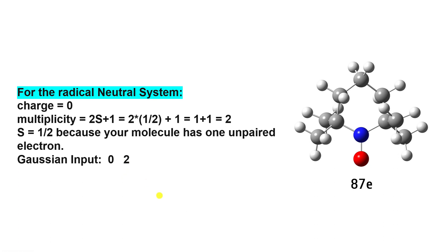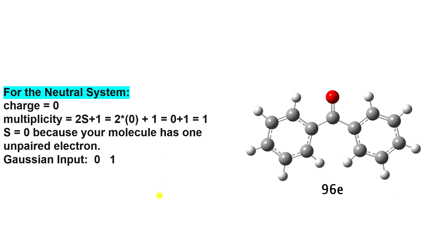The second system is the pure neutral system — not a radical. This is actually benzophenone. The total charge of this system is zero and the total number of electrons is 96. Everything is completely paired; there is no unpaired electron.